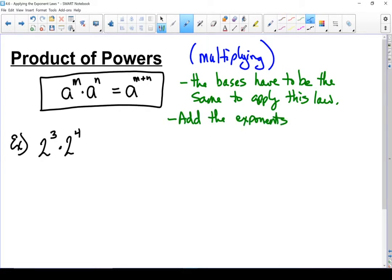Let's do an example. Two to the power of three times two to the power of four equals two to the power of three plus four. Two to the power of seven equals 128.